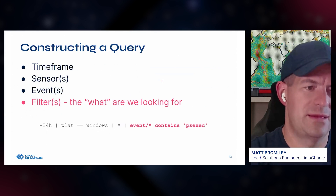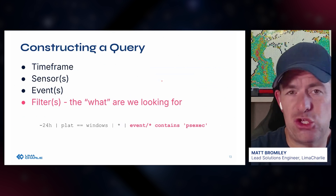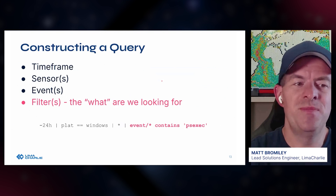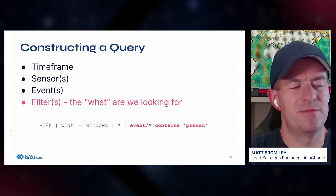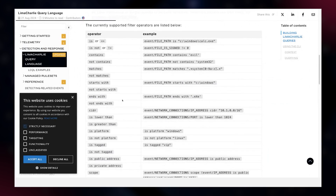Last but not least in the required fields is the actual filter itself — the 'what' we are looking for. There are really three parts to this. First: inside the event you declared, what field or fields would you like to search? In the case of a wildcard, it's simply going across all fields. Second: the text matching qualifier — the operator. Rather than dump all options onto a slide, I'll bring up our documentation. The operators inside filters include: is, is not, contains, matches (with regex), ends with, starts with, is lower than, is greater than, is tagged, private address, public address, CIDR notation, and decorations like 'with child,' 'with descendant,' or 'with events.'